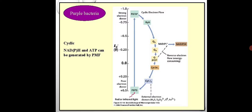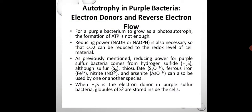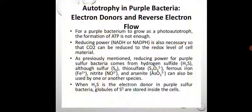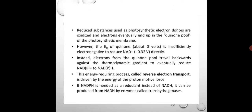This is a simple concept that was remaining from the first part of the lecture on anoxygenic photosynthesis in purple bacteria. If you know the complete cycle, it is very easy to understand this reverse electron flow, also known as autotrophy in purple bacteria. I hope it is helpful and you have understood this concept. Thank you.